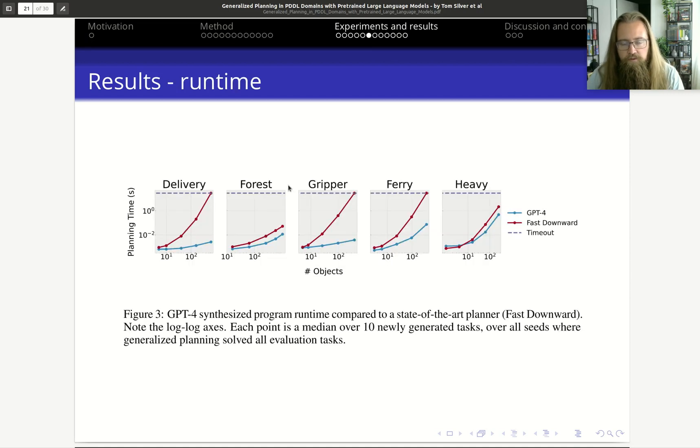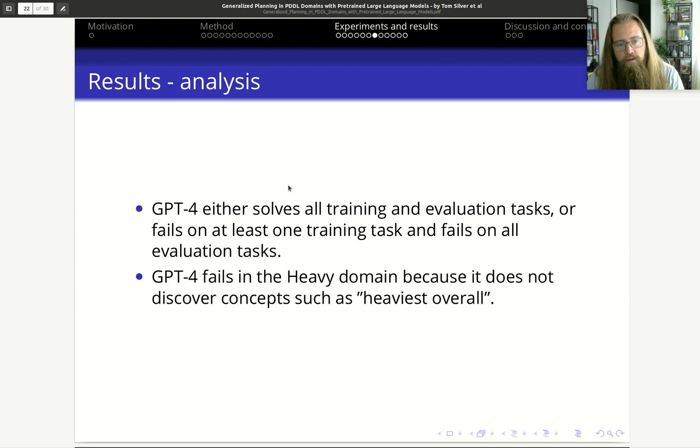These are the results. They also see that the runtime is pretty much a lot better than Fast Downward, which is kind of the state-of-the-art symbolic search-based planner. It's interesting though that they only show the runtime on these five domains, even though there are actually seven domains, so maybe there is some cherry-picking here.